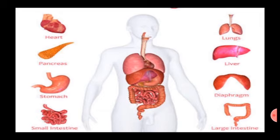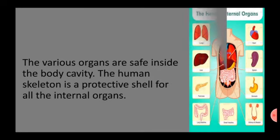Here in the figure you can see the internal organs: heart, pancreas, stomach, small intestine, lungs, liver, diaphragm and large intestine. These all are situated inside our body. The various organs are safe inside the body cavity. The human skeleton is a protective shell for all the internal organs, and all the internal organs are well protected due to the skeleton.